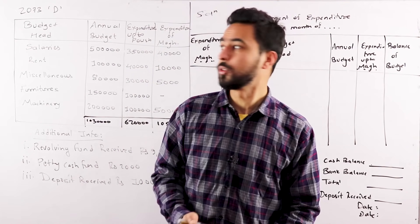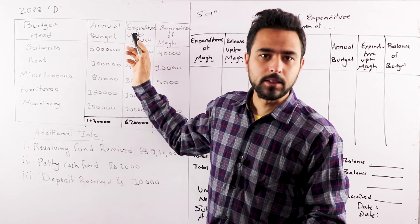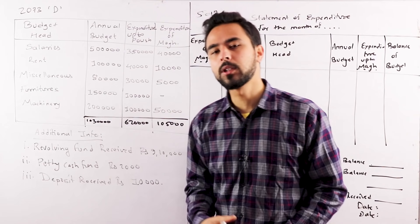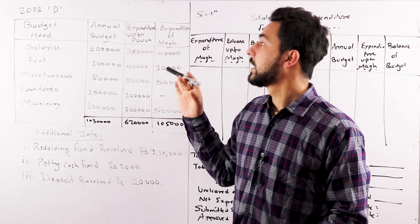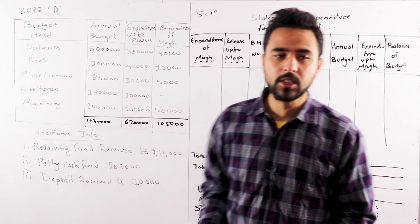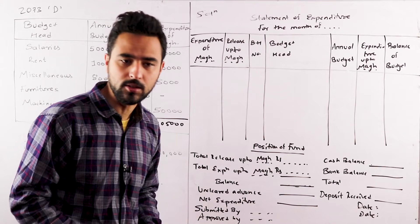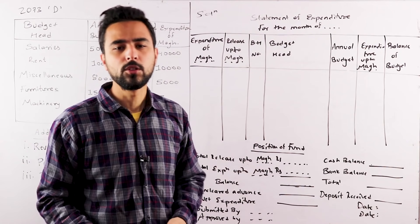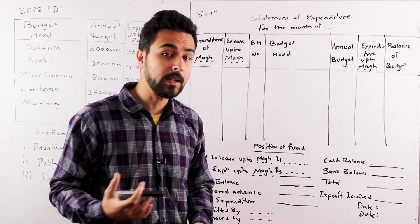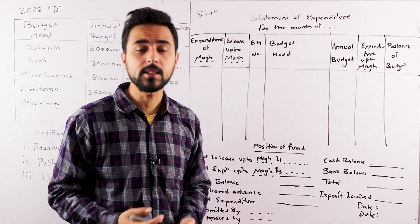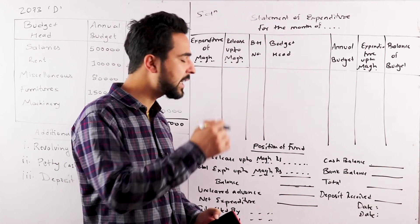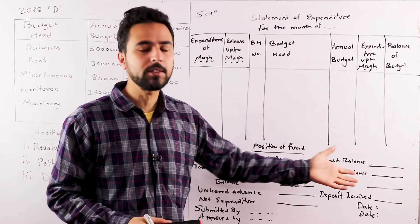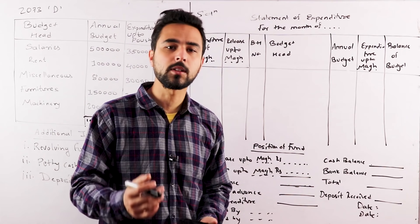Today we are going to talk about the account and the statement of expenses. In this chapter, we will talk about the question in the 2073 exam, from the old question bank. We will talk about the solution, which will create a format for the statement of expenses. We have a process that develops the statement of expenses.